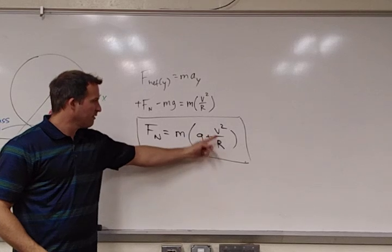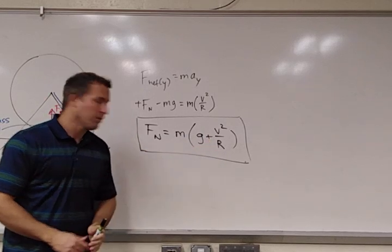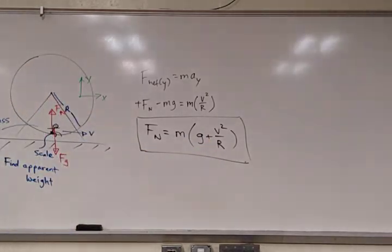And we've got, the mass is given, v and r is given, and of course, we know g is 10 meters per second squared in our class. Let's see. Let's do it.